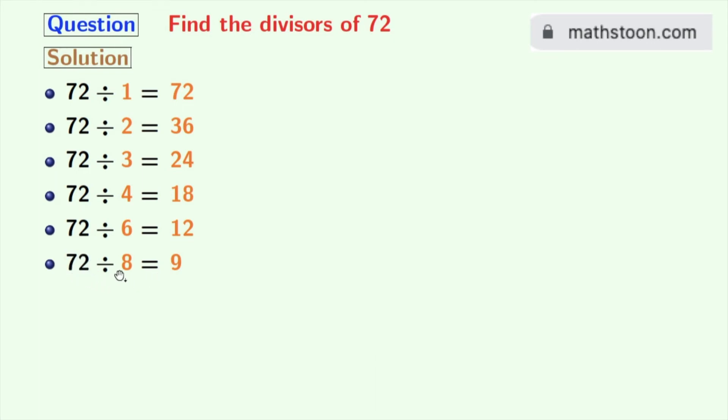The next number 9 is already here. So we will stop right now. Now look that we have all the divisors of 72 in orange colors.